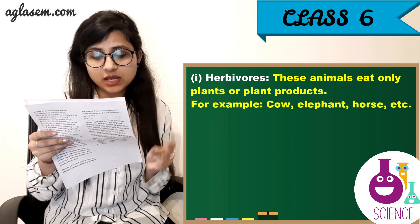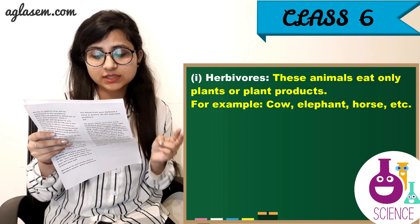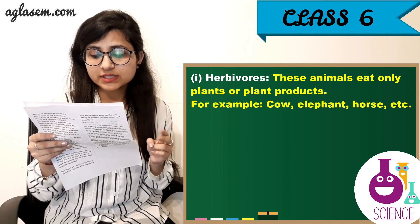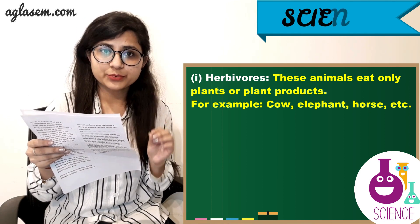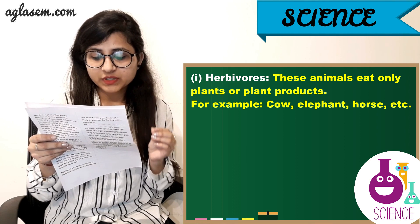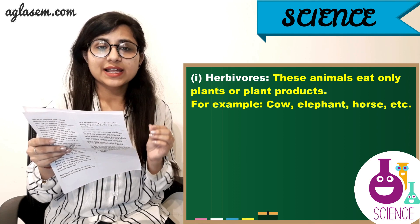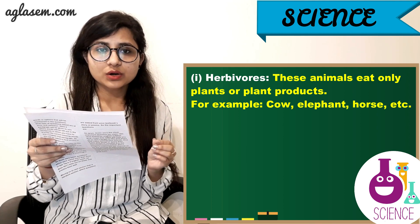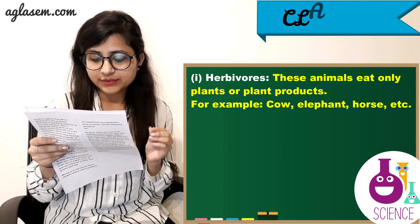1. Herbivorous — these animals eat only plants or plant products. For example, cow, elephant, horse, etc.